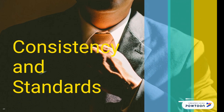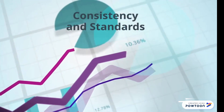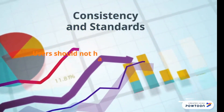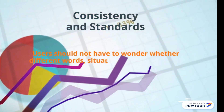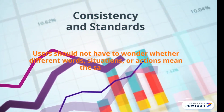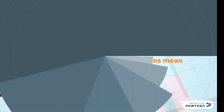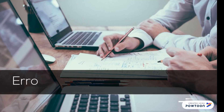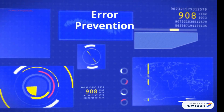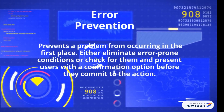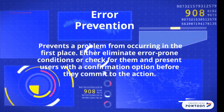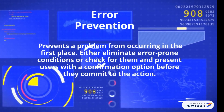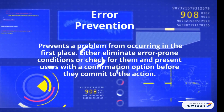Consistency and standards. Error prevention — prevent a problem from occurring in the first place. Either eliminate error-prone conditions or check for them and present users with a confirmation option before they commit to the action.